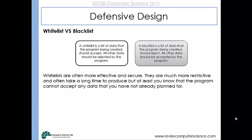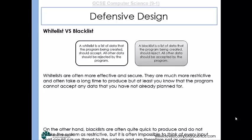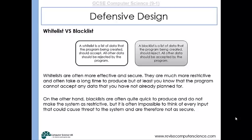When it comes to whitelists, they are definitely more effective. They're more secure, they're really restrictive, and they often take a long time to produce because you're literally listing every single input that you will accept. But by doing that, you know the program cannot accept any other data that you haven't planned for — so it will be very, very secure, but often very restrictive. Blacklists, on the other hand, are very quick to produce. But they don't make the system as restrictive — it's impossible to think of every possible input that could cause a threat, and therefore it's not as secure.